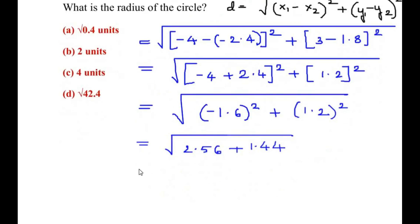So when you add these two numbers you get square root of (2.56 plus 1.44), which gives us 4.00, or we can just write it as 4. And square root of 4 is nothing but 2 units.